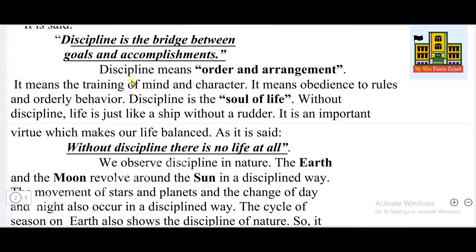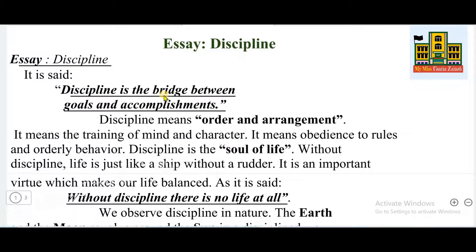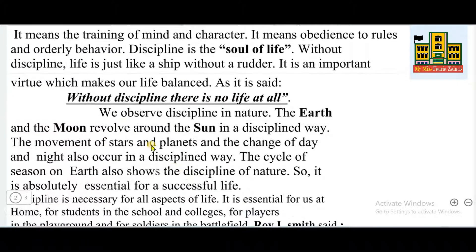We have started our essay with a quotation. Discipline is the bridge — a bridge is a thing that connects two things. Discipline connects goals and accomplishments: goals are the aims of your life and accomplishments are your achievements. So if you have discipline, you can bridge your goals and your achievements. Discipline means order and arrangement, the training of mind and character — that you train your mind and your character to live a life of rules and regulation. It is the obedience to rules and orderly behavior, and it is the soul of life. A rudder is the upright part at the back of a ship used for steering. When there is no rudder in the ship, you cannot steer it — similarly, when you don't have discipline, you cannot live your life in an orderly way. It is an important quality which makes our life balanced. As it is said, without discipline, there is no life at all.